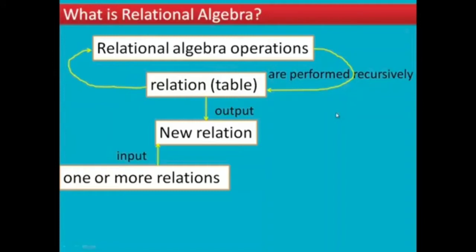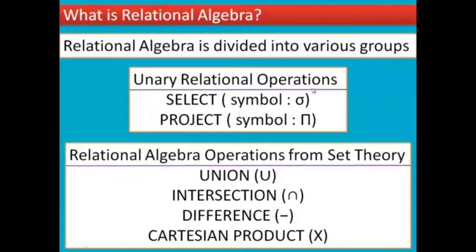Relational algebra operations are performed on tables. You can create a new relationship in the table. The output in the table creates a new relationship from one or more relations. This process outputs a new relationship, where the input is one or more relations and the output is a new relationship.